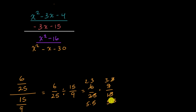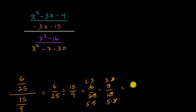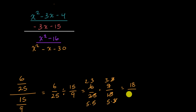We have a three in the numerator and a three in the denominator, and that's about as far as we can get. So we'll have two times three times three, which is 18 in the numerator. And then in the denominator we have five times five times five, which is 125.